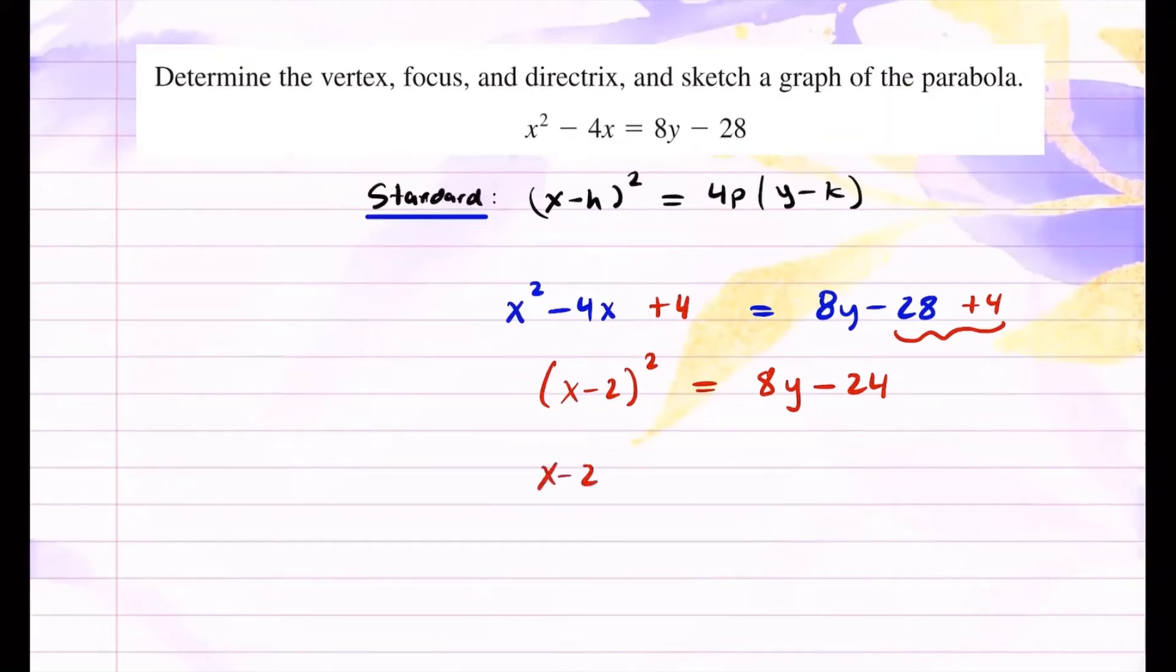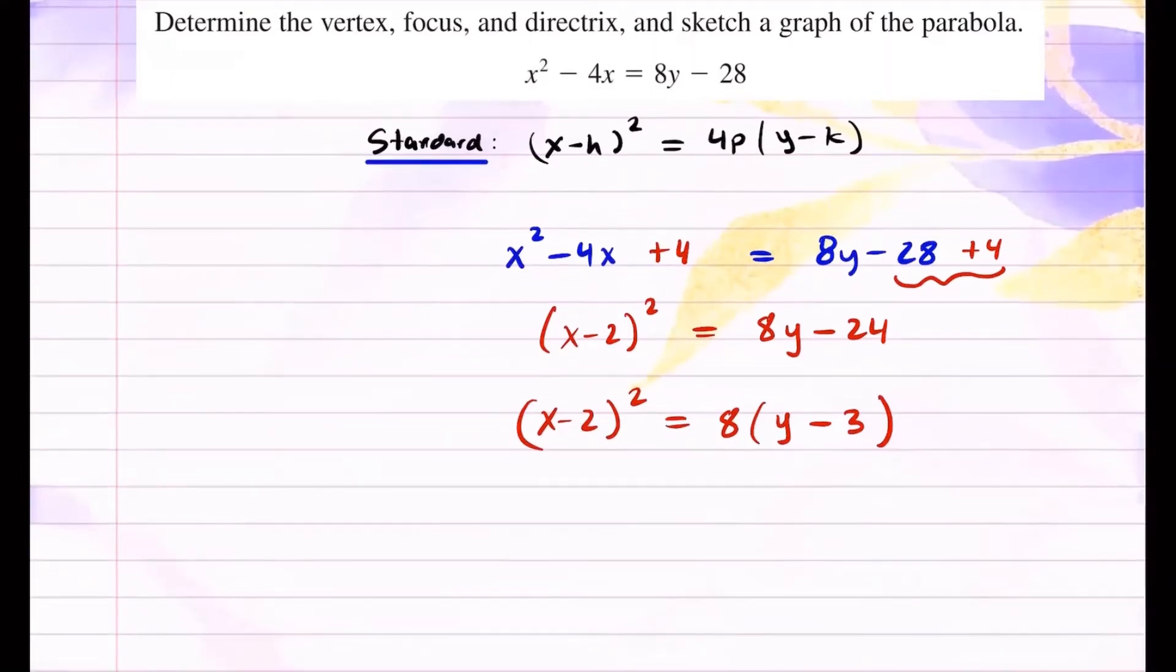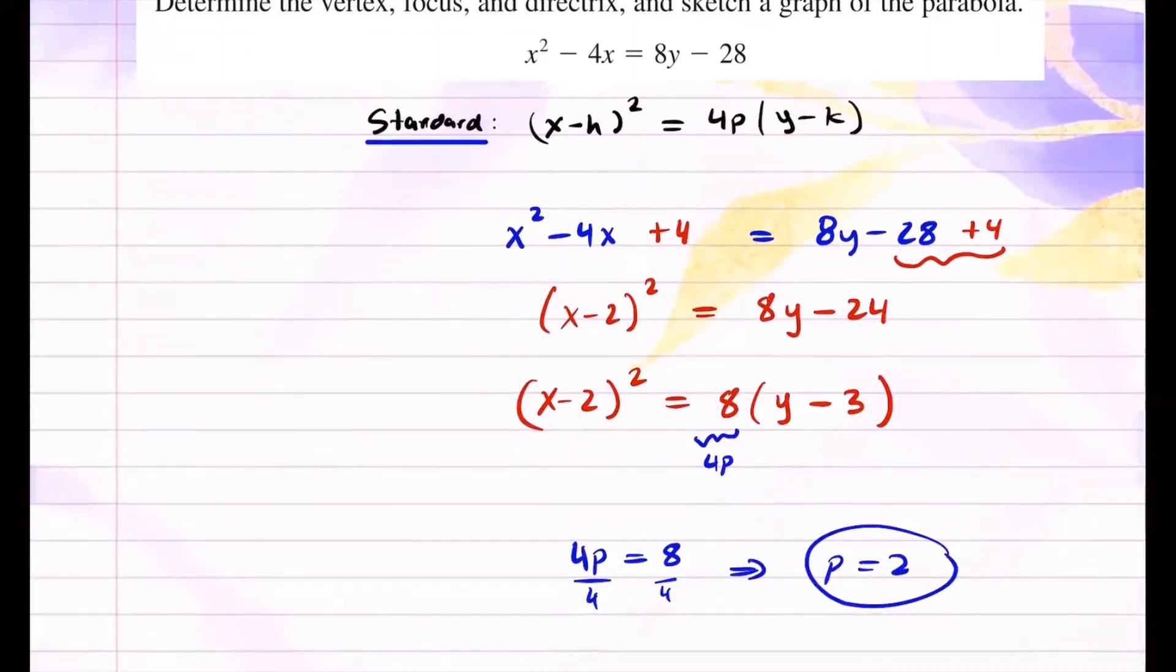So you have (x - 2)². On the right hand side, I can pull out the 8. Then you have y - 3. Now it looks exactly like this form right here, the standard form. Once you know that, we can start graphing. And we can also find the value for p. So we know this number right here is equal to 4p. So we know 4p is equal to 8. Divide both sides by 4. You'll get p is equal to 2. Now everything becomes straightforward.